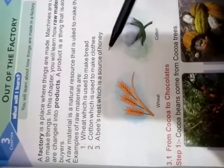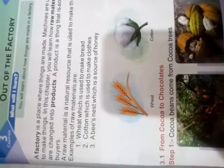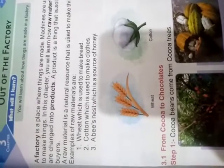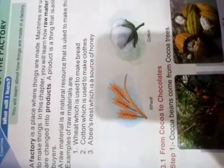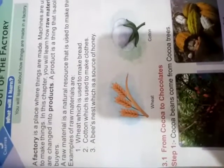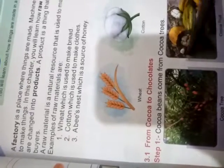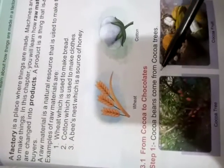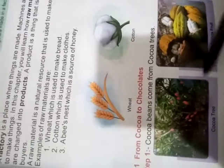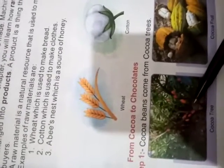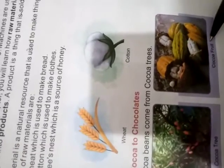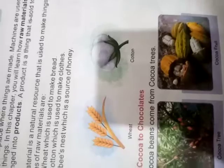A bees' nest, which is a source of honey. Cocoa beans, which come from cocoa trees, are used to make chocolate. The cocoa beans are a raw material that comes from the fresh fruit of the cocoa tree.